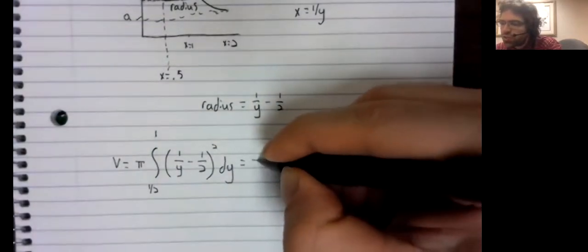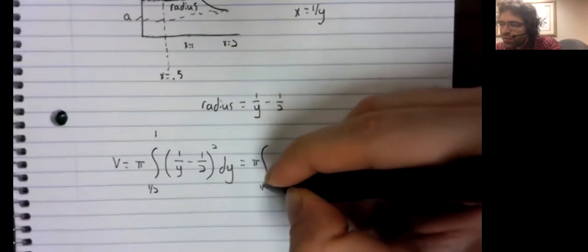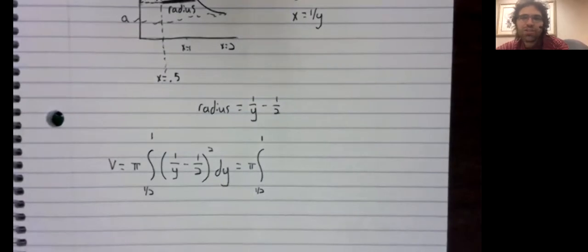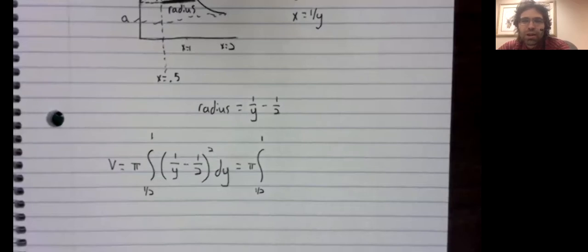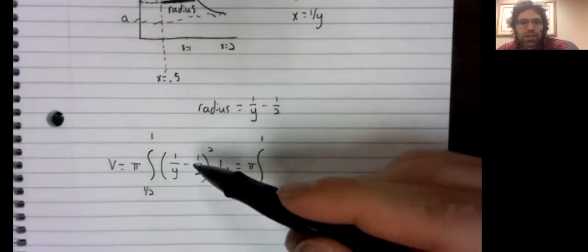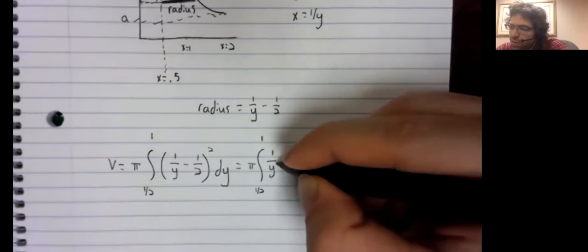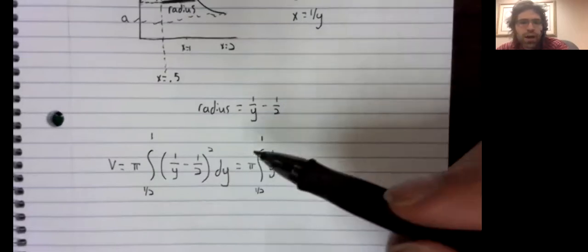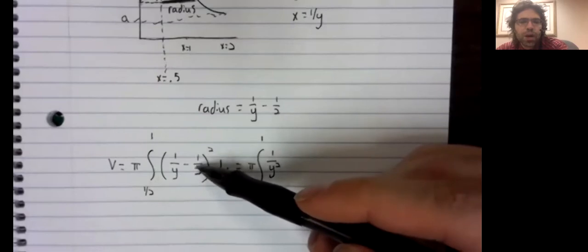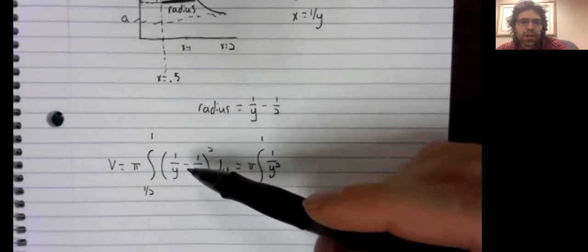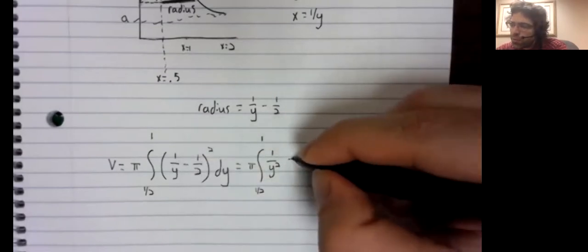And now let's see if we can compute this without too much fuss. Writing integrals is easier than actually computing them, as we know, but let's FOIL this out. 1 over y squared minus one half times one over y minus another one half of one over y.